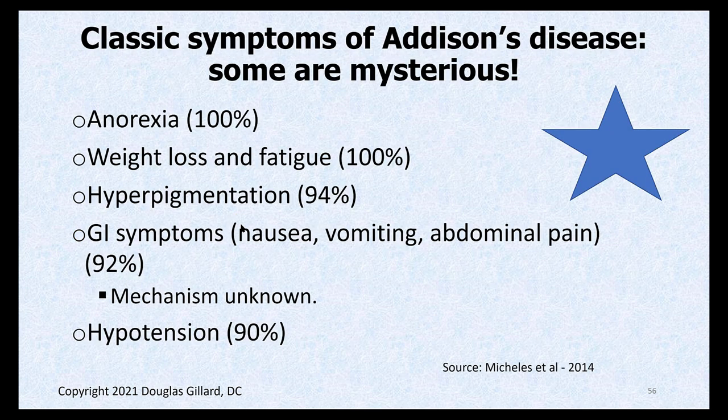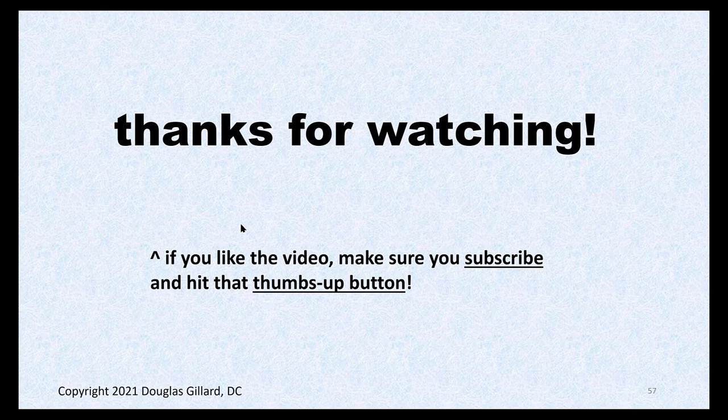Classic symptoms of primary adrenal insufficiency include mysterious GI symptoms — nausea and vomiting — which may be mistaken for appendicitis or small bowel obstruction. Patients lose weight and become anorexic due to ongoing GI symptoms. Hyperpigmentation occurs in 94% of patients, and hypotension in 90%. Next time we'll continue and get into secondary adrenal insufficiency.